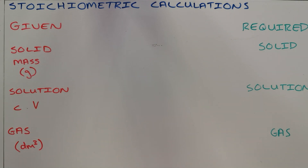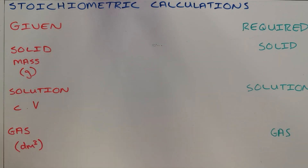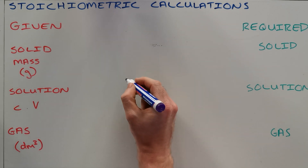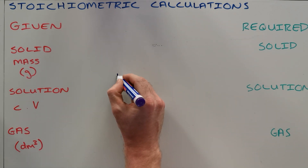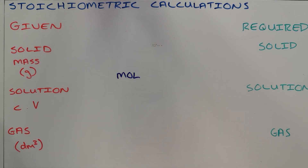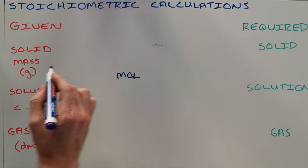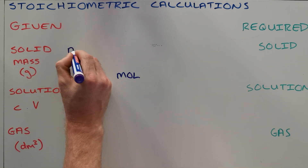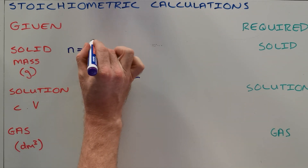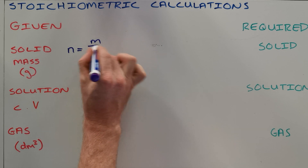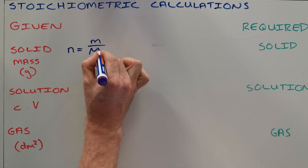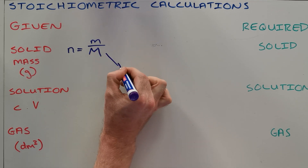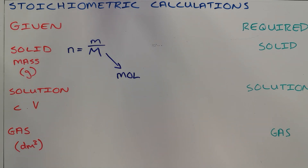The first step in order to get from what you've been given to what is required of you is that you must convert it into a number of moles. We do that using three different formulae. If you have been given a mass, you would use the formula: number of moles equals the mass given in grams divided by the molar mass of that substance.